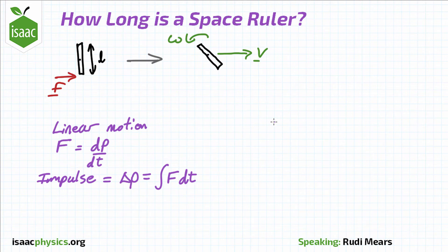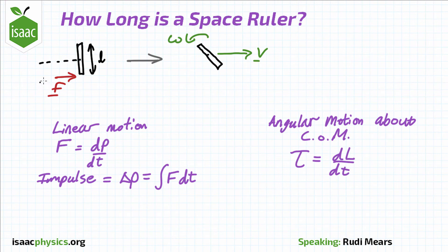We can now move on to considering the angular motion about the center of mass. The rotational equivalent of Newton's second law is that the torque τ equals dL/dt, or the rate of change of angular momentum. Since the ruler is tapped at one end, there is a torque about the center of mass.